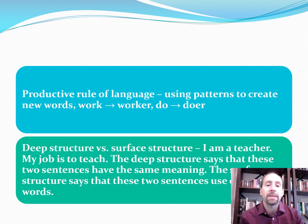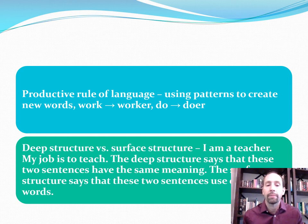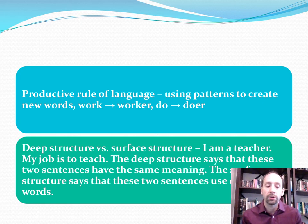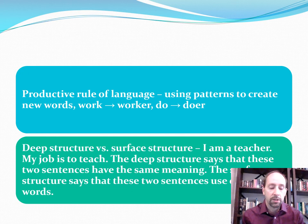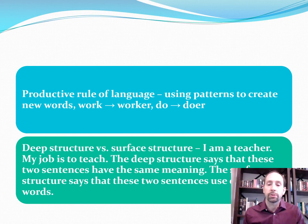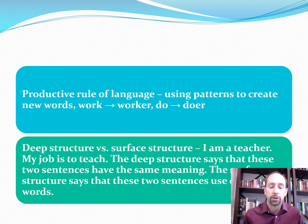Deep structure versus surface structure: take two sentences — 'I am a teacher' and 'my job is to teach.' Deep structure says those sentences are basically the same — they have the same meaning. But surface structure looks at the sentences part by part and says they are different. When translating between two languages, we typically want to use deep structure, as there could be more than one way to translate, whereas surface structure goes word by word.